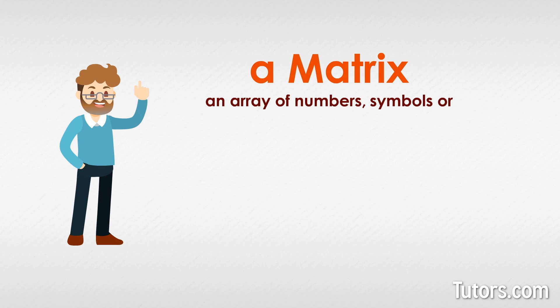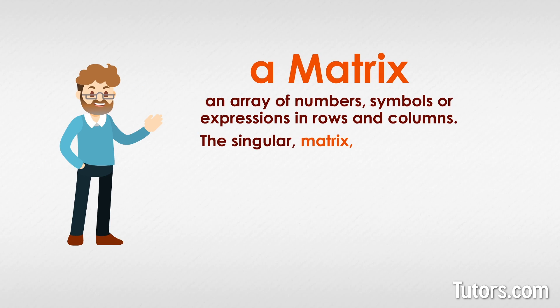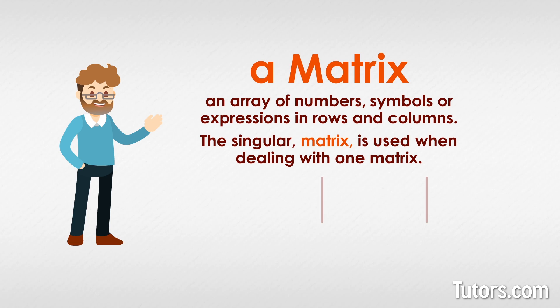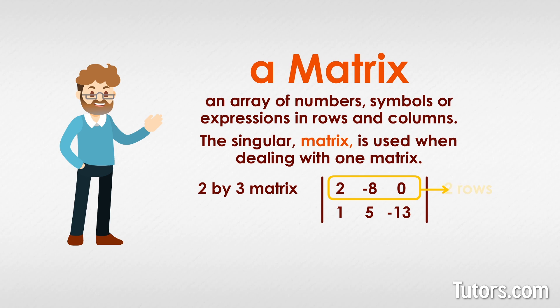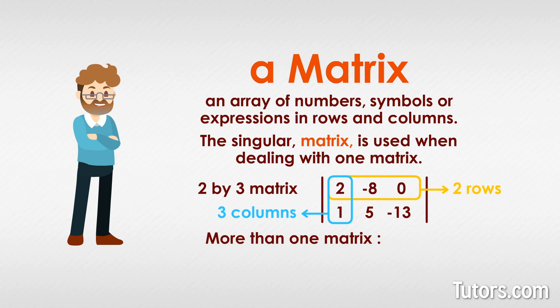A matrix is an array of numbers, symbols, or expressions in rows and columns. The singular 'matrix' is used when dealing with one matrix. The number of rows and columns is always indicated in the same order, so the matrix above is a two by three matrix, meaning two rows and three columns.